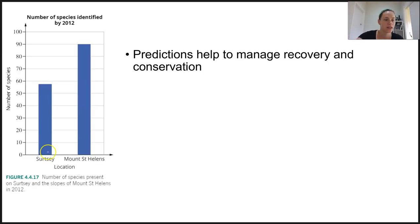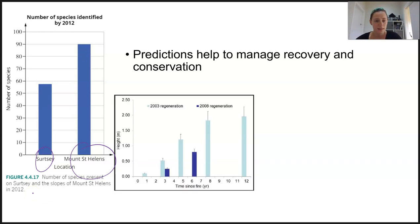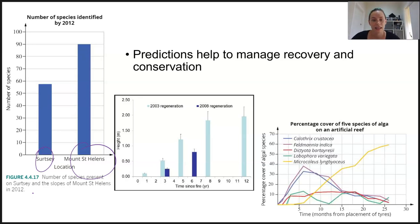In this situation we're looking at Surtsey Island versus Mount St Helens Island. Given the time periods, different numbers of species will arise. In this situation we're looking at time since a fire and then the height of certain vegetation in the area, and here we've got the percentage cover of different algae species if you place a tie inside a coral reef and see what happens.